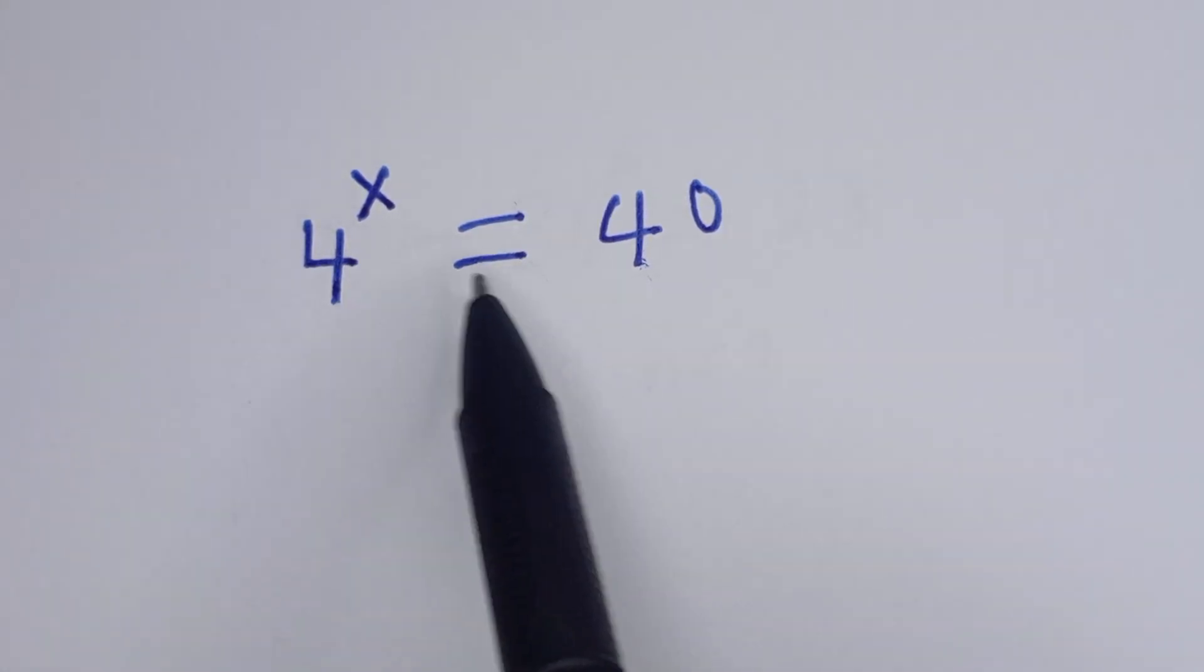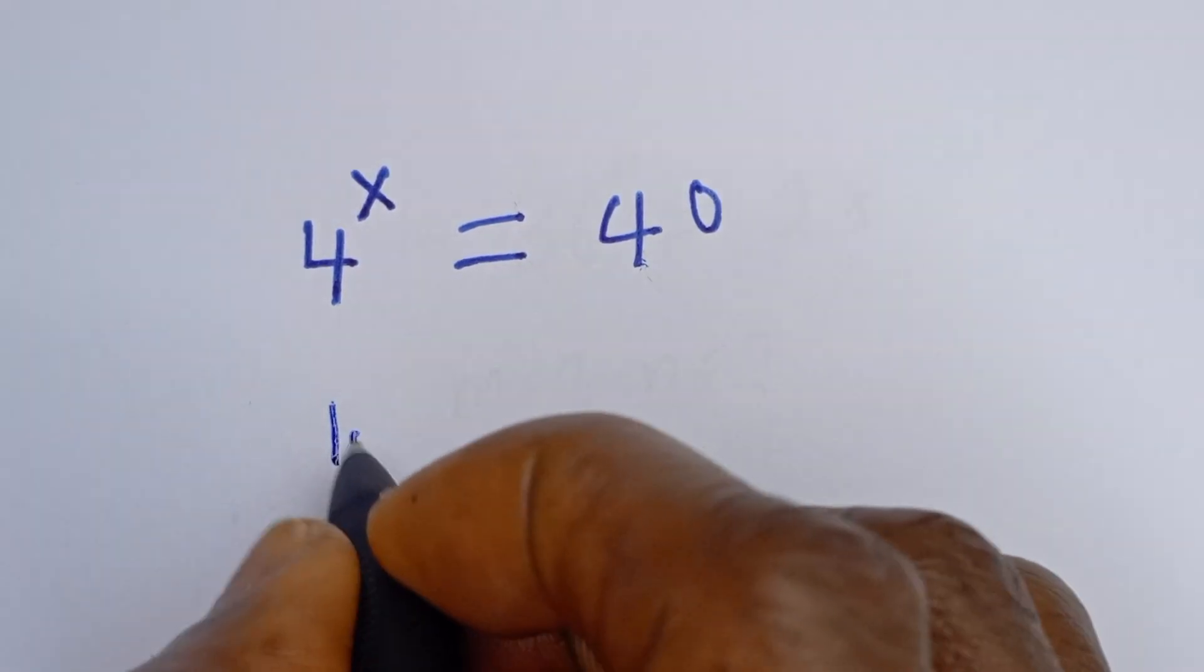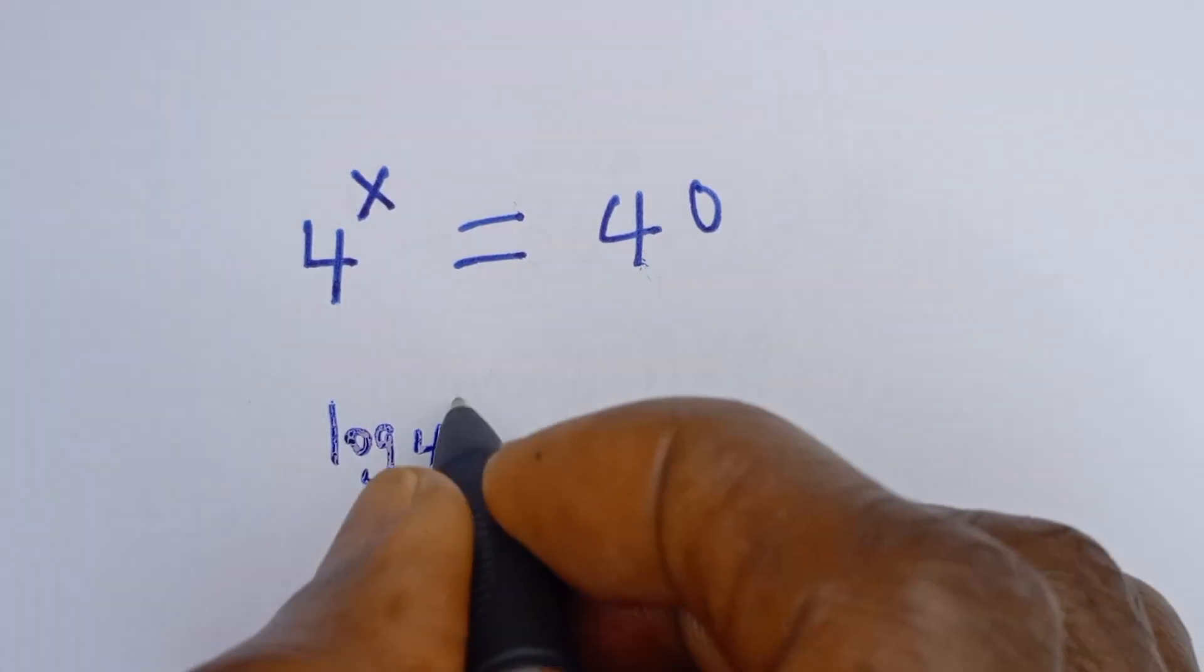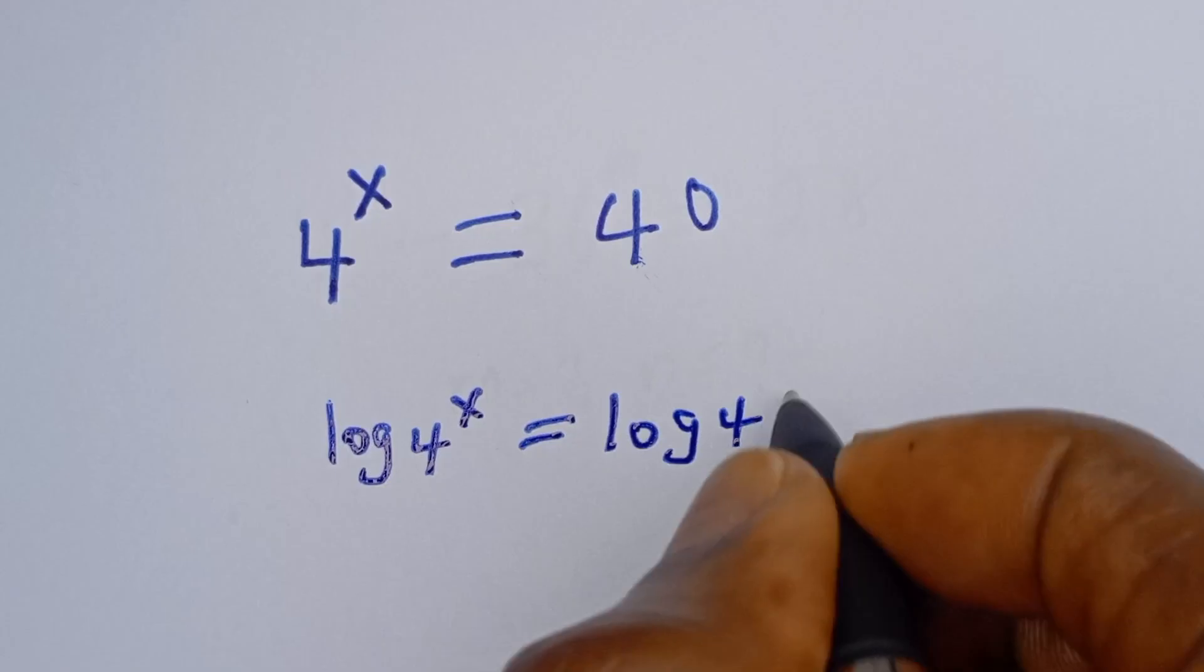Hello, how to solve for x in this beautiful equation: 4 to the power of x is equal to 40. Now let's take the log of both sides. Log 4 to the power of x is equal to log 40.